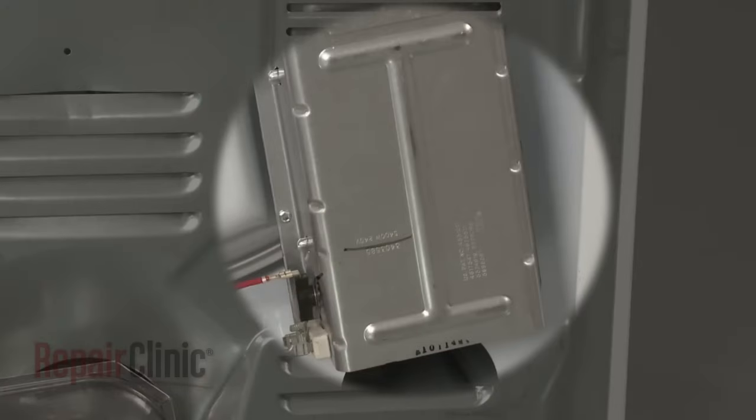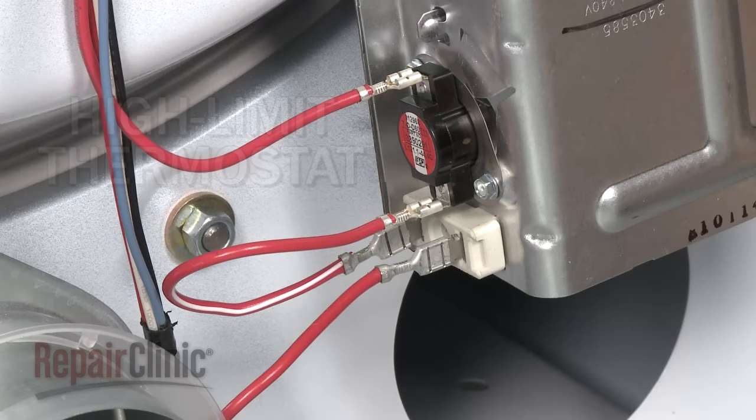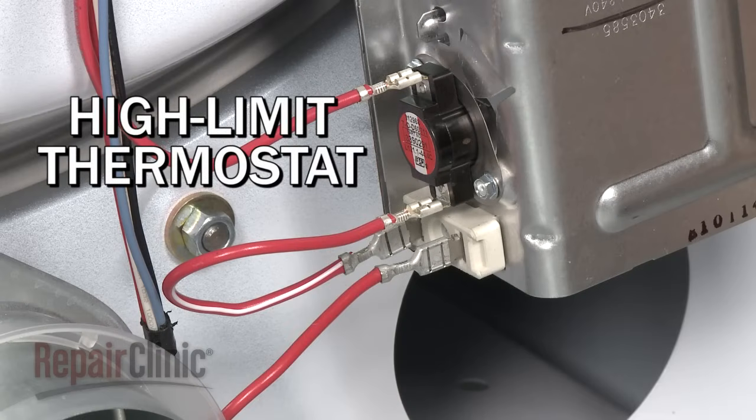If the airflow is poor, the heat from the element will not be pulled through the heater housing properly. This can cause the high-limit thermostat to heat up and switch off the voltage to the heating element. The thermostat will reset after it cools, and the process will repeat.